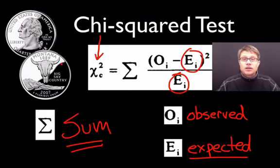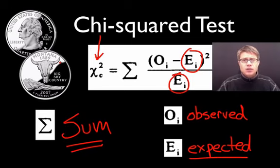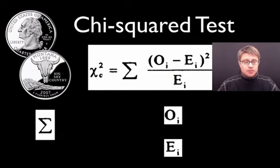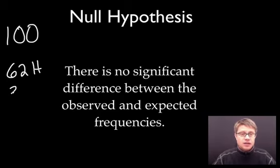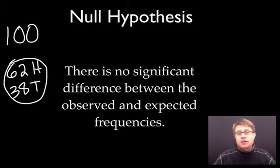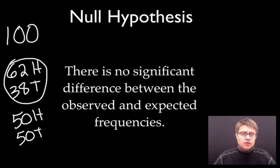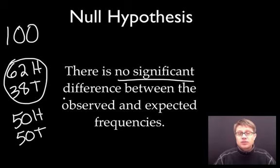Let me give you an example with these coins. Let's say I flip a coin a hundred times and I get 62 heads and 38 tails. Is that due to just chance, or is there something wrong with the coin or the way I'm flipping it? The chi-squared test allows us to answer that. In my head I'm thinking about something called a null hypothesis. If we flip a coin a hundred times and get 62 heads and 38 tails, those are the observed values. But the expected values would be 50 heads and 50 tails.